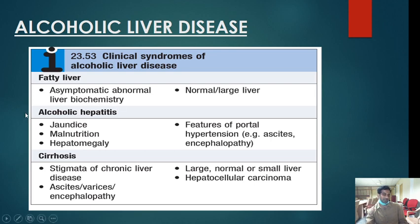Alcoholic hepatitis is a more dangerous condition. Because there is hepatitis, the patient has jaundice, hyperbilirubinemia, and malnutrition. The patient will have hepatomegaly with pain, and features of portal hypertension are usually seen, including ascites and encephalopathy.